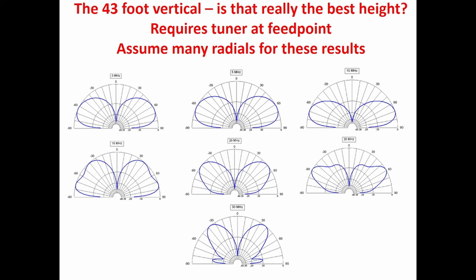The 43-foot vertical — I think you guys sell that, and a lot of people have. They're good, don't get me wrong. It works well on most frequencies. My analysis assumes you have many radials — sort of a perfect ground system. The reason it works is you have a tuner right at the feed point, because you don't want high SWR on the coax, which increases loss. Tuners can have some loss depending on the impedance, but a good tuner can probably match just about anything without too much loss.